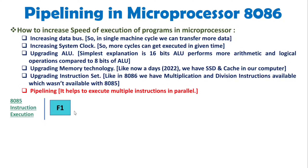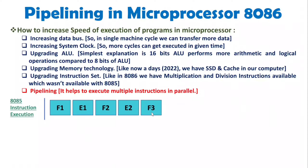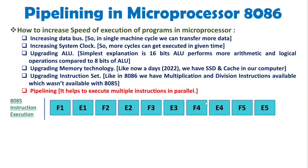With 8085, first we fetch an instruction, then we execute it. For a second instruction, we do the same — fetch, execute. Then the third: fetch, execute; the fourth: fetch, execute; and the fifth: fetch, execute. If you observe the horizontal axis representing time, there are a total of 10 machine cycles required for the execution of these 5 instructions.